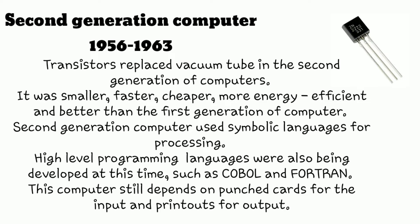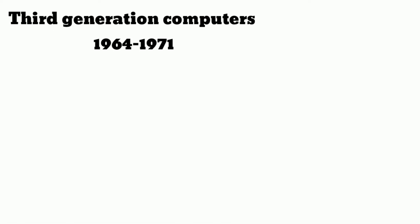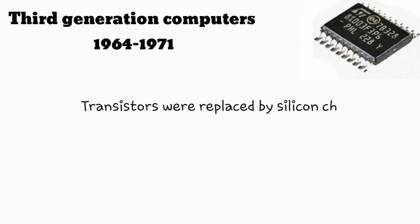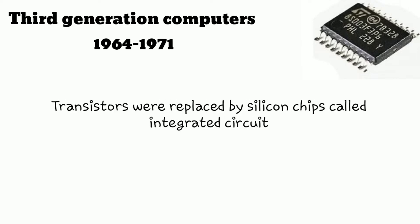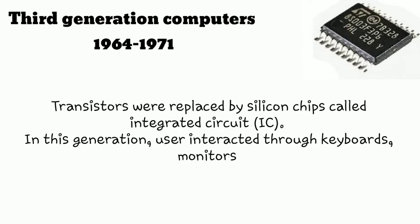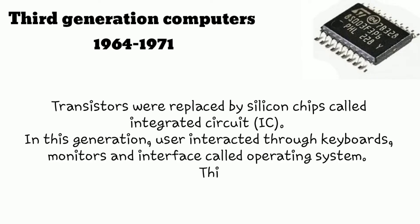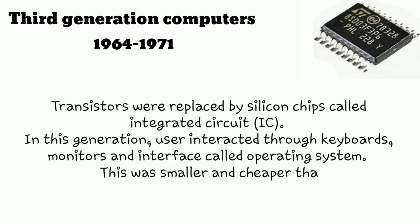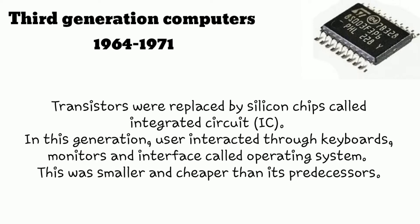You can see the picture of the transistor at the corner. Now third generation computers, 1964 to 1971. Transistors were replaced by silicon chips called integrated circuits. In this generation, users interacted through a keyboard, monitor, and interface called the operating system. These computers were smaller and cheaper than their predecessors. The image of an integrated circuit is shown at the corner.